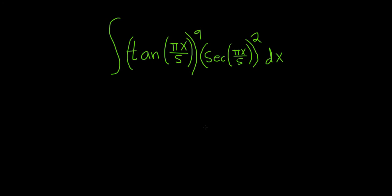So whenever you have powers of tangent and secant, there's a rule that you can use to figure it out. If you have an even power of secant, you can save a secant squared. If you have an odd power of tangent, you can save a copy of secant tangent.